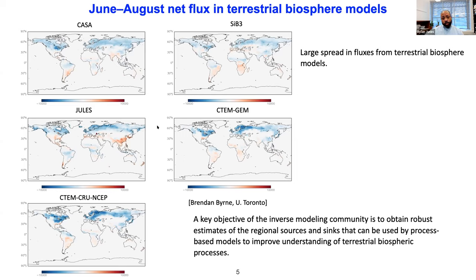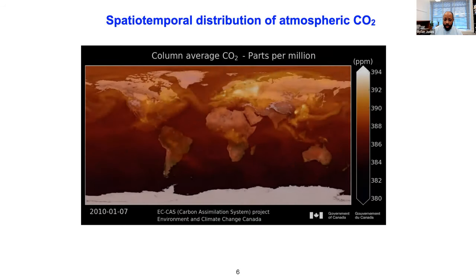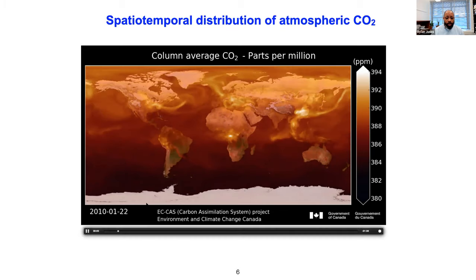There is also a growing interest in using atmospheric CO2 measurements in an inverse modeling context to quantify anthropogenic emissions from fossil fuel combustion. To tease out the human signal, we need to reliably estimate what the biosphere is doing. A key challenge is to develop an effective observing system that provides the information needed to constrain fluxes on regional scales. To give a sense of the challenge, here is a model simulation of CO2 from the Environment and Climate Change carbon assimilation system.